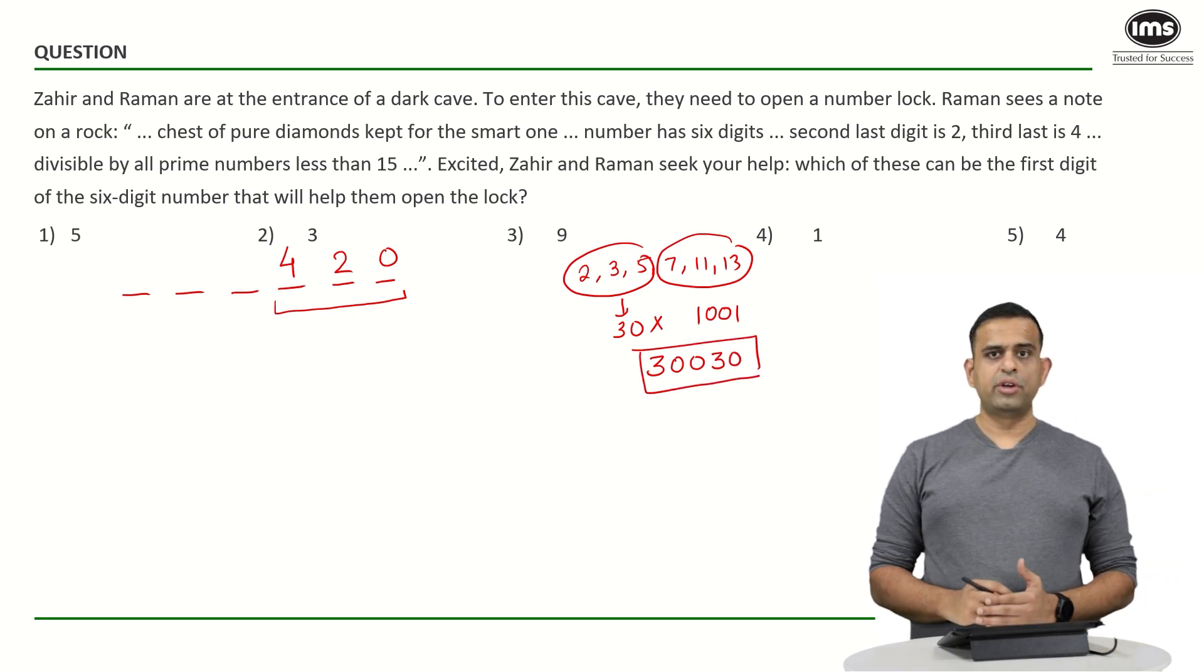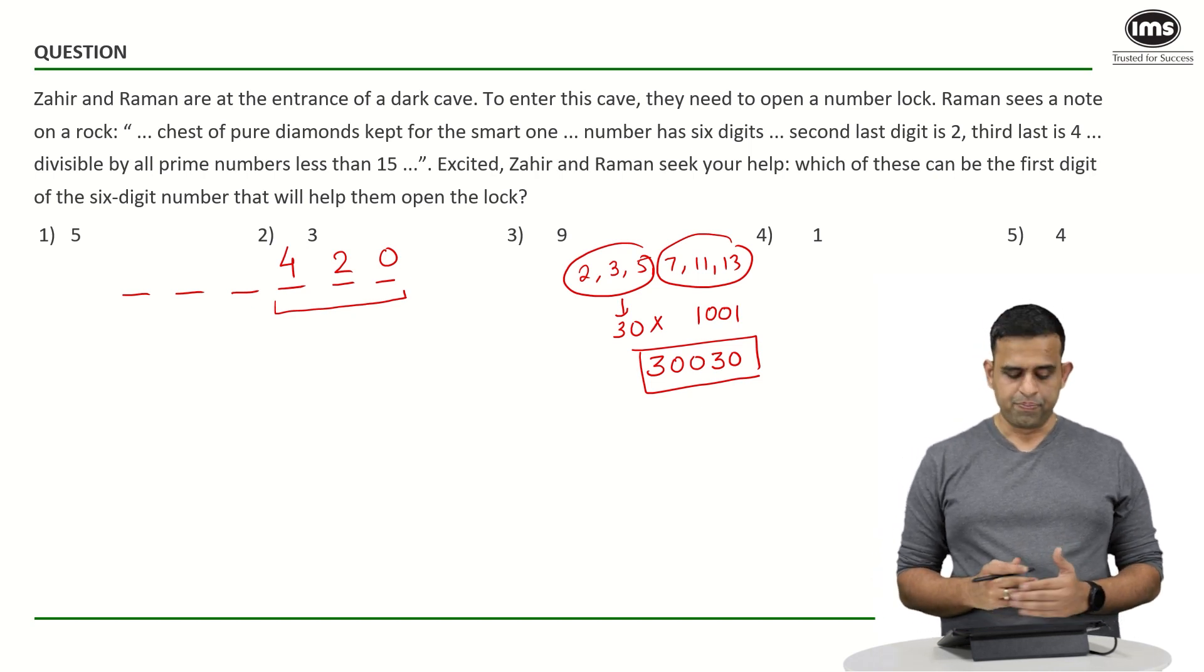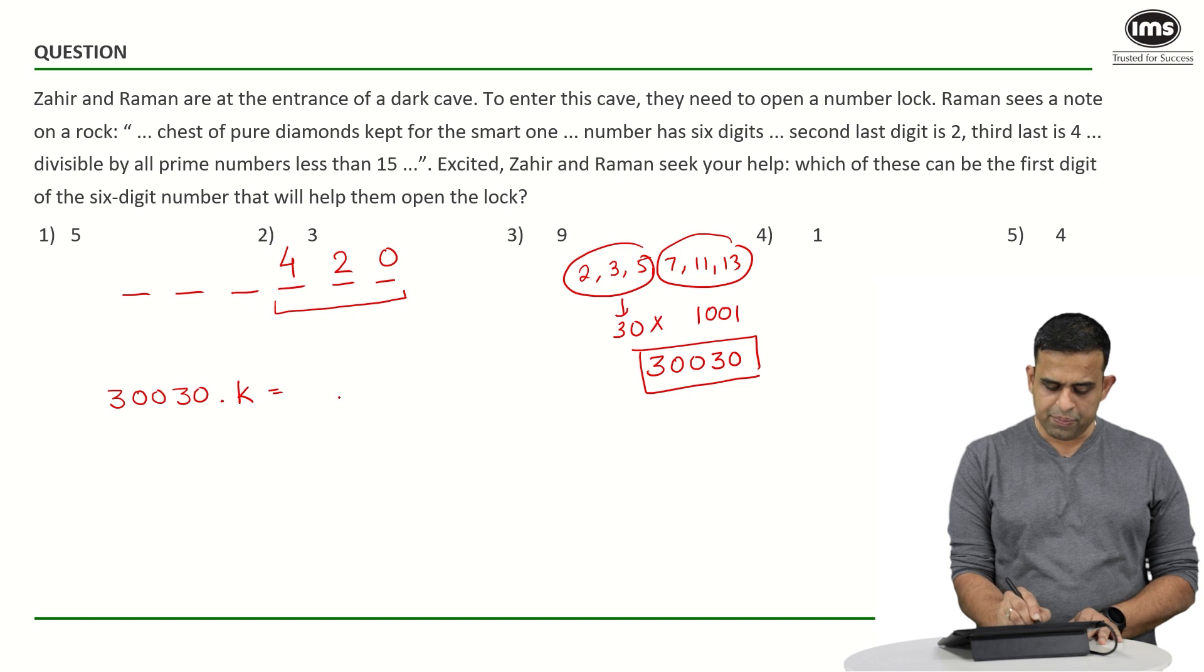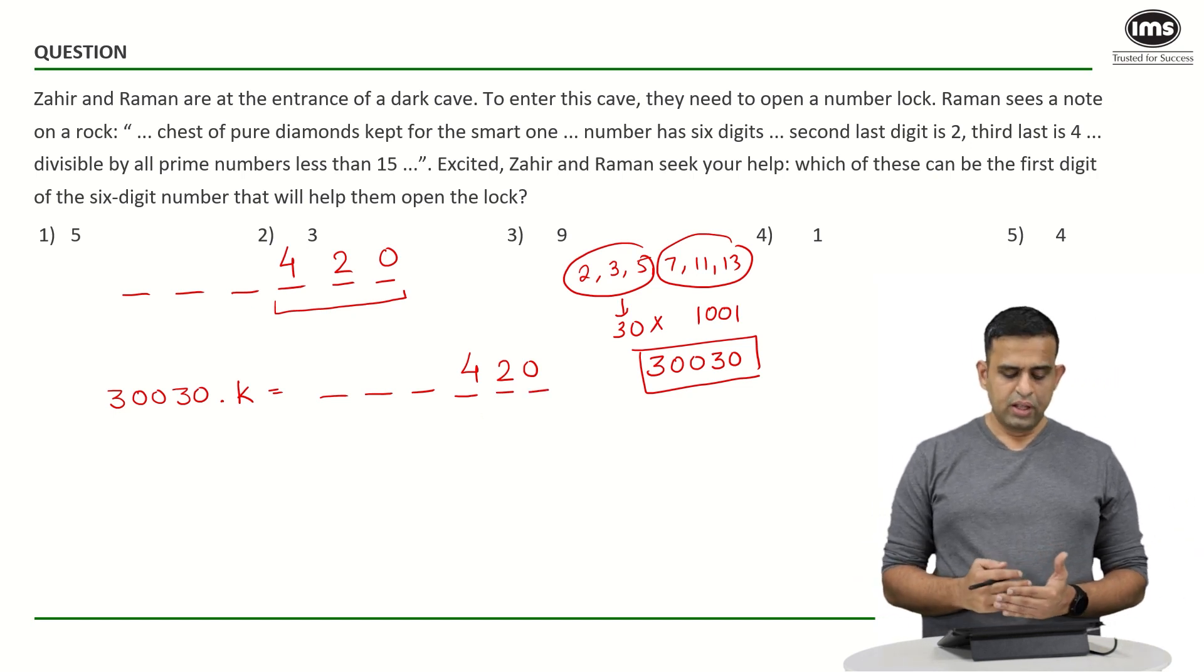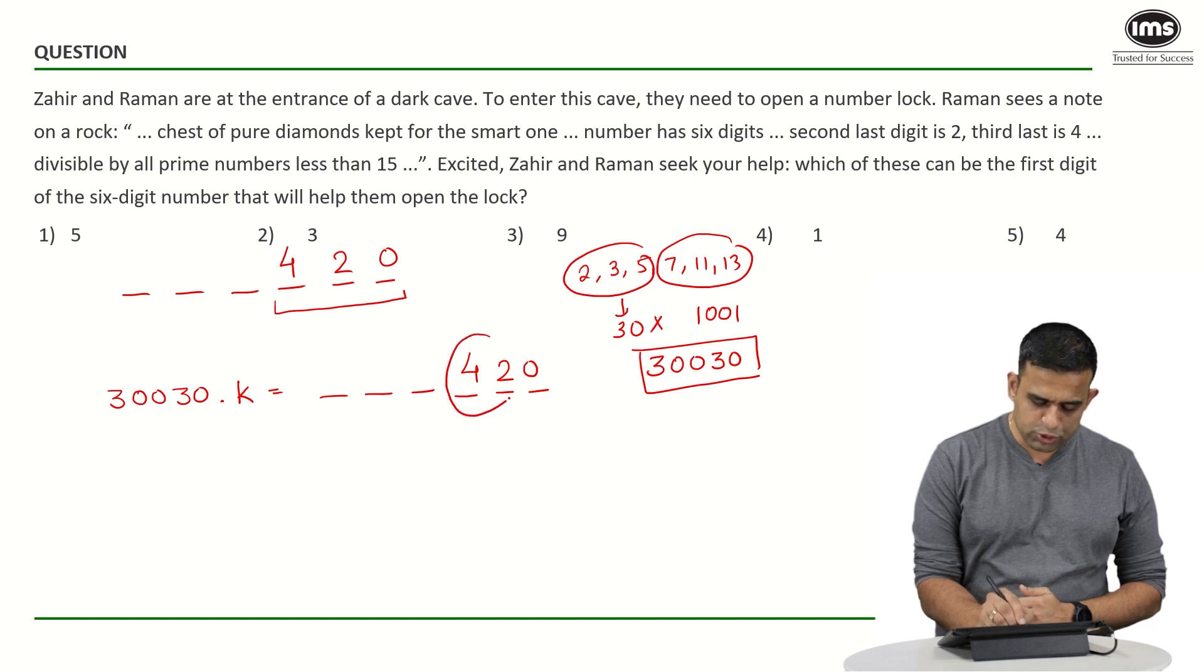So the code which I am looking for has to be a multiple of 30030. So what can one say now that 30030 into some number k should be a six digit number ending with the number 42 and 0.